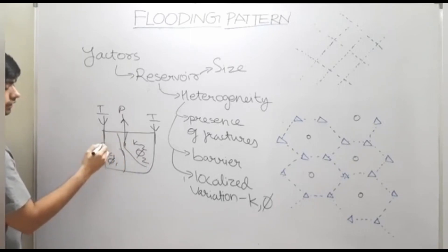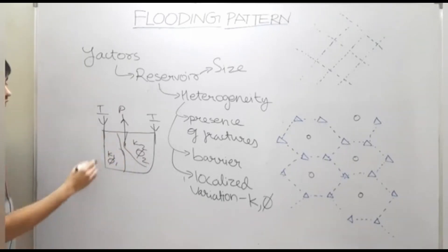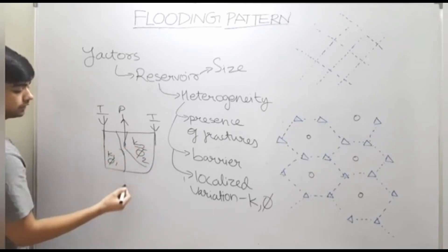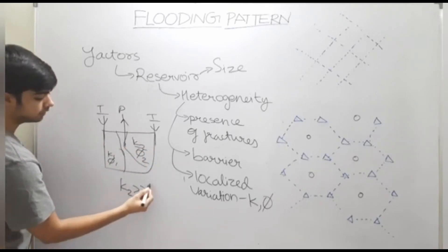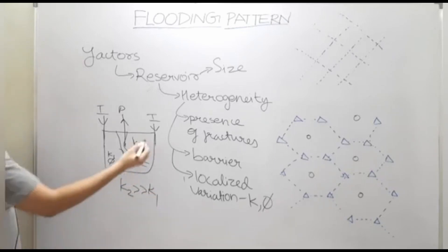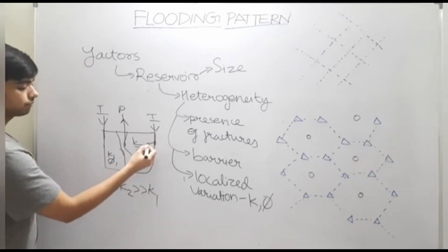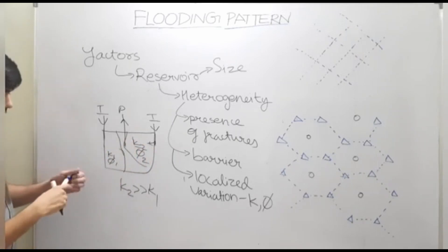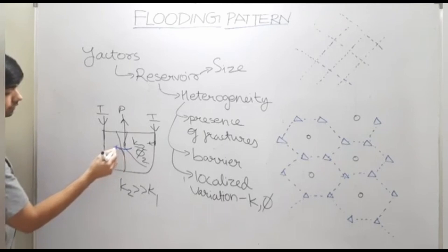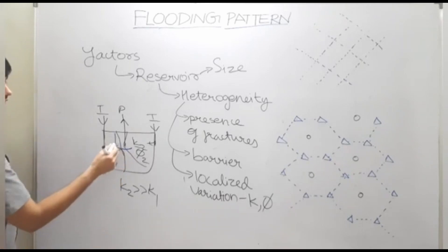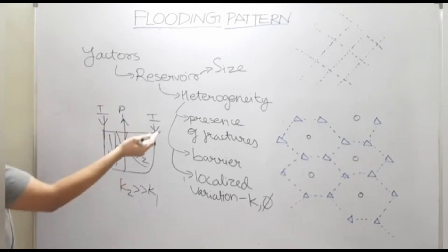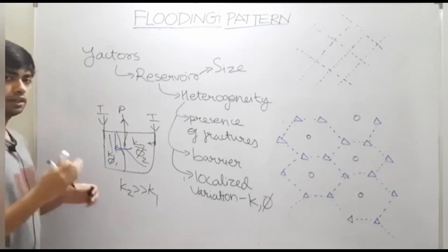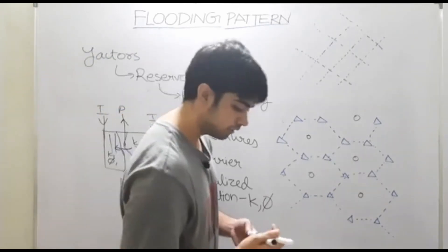If we do not analyze porosity and permeability at different regions, we can see ineffective recovery. For example, if k2 is much greater than k1, when we inject water from that region, water will not only displace oil towards the producing well but will also displace oil towards the injector well. These reservoir characteristics must be taken into account before starting the water flooding process.